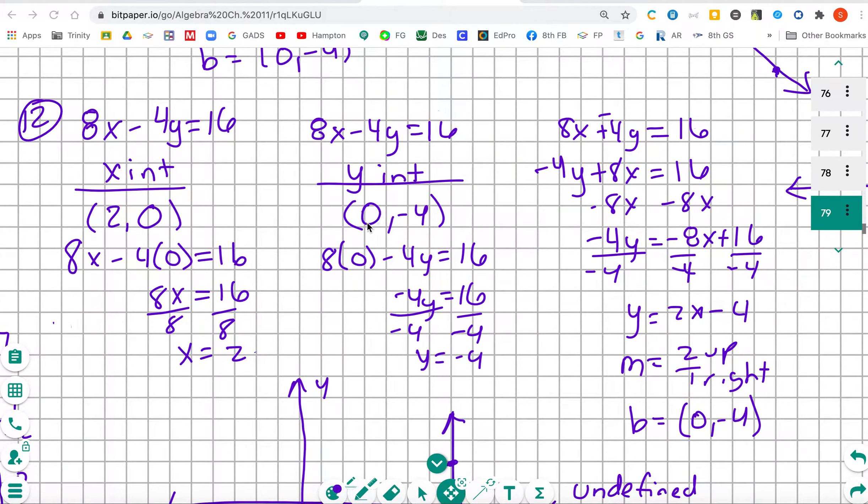For the y-intercept, x is 0. You're going to put the 0 in for the x anywhere in the equation. We're going to end up with negative 4y is equal to 16. Divide by negative 4. y is equal to negative 4. So our y-intercept is (0, -4).